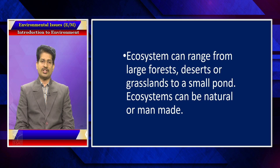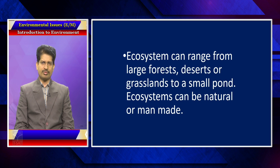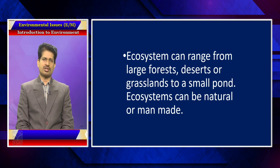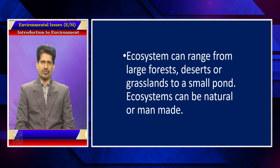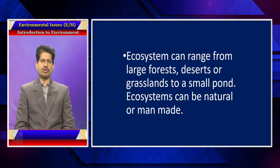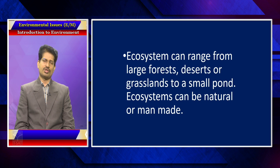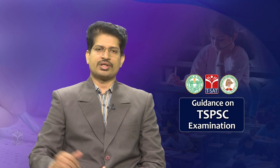Ecosystems can range from large forests, deserts, or grasslands to small ponds. Ecosystems can be natural or man-made. You have aquatic ecosystems — for example, the marine environment, oceans, lakes, and rivers. You have terrestrial ecosystems — forests, deserts, ice caps, and glaciers. Different topographical features of the earth have different ecosystems, some natural and some man-made.